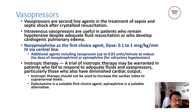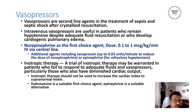Regarding vasopressors: if hypotension is not getting corrected with initial fluid resuscitation, start vasopressors. The best vasopressor and first-line drug is norepinephrine, at a dose of 0.1 to 1 microgram per kg per minute IV, given only through a central line — peripheral administration carries a high risk of gangrene. If the patient does not improve, titrate the dose upward or add vasopressin at 0.03 units per minute. If the patient has bradycardia, dopamine may be a good choice. If tachycardia is present, vasopressin is the second-line drug.